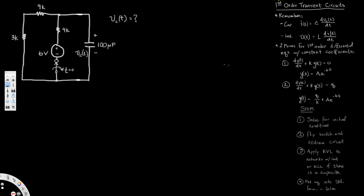When we solve these problems we get the final answer in two different patterns. If the result equals zero, we express the answer in one pattern; if we get a constant, we use the other. The solution steps are: first find the initial condition, then flip the switch and redraw the circuit, then apply KVL for networks with an inductor or KCL for a capacitor, put the equation into standard form, and then solve.